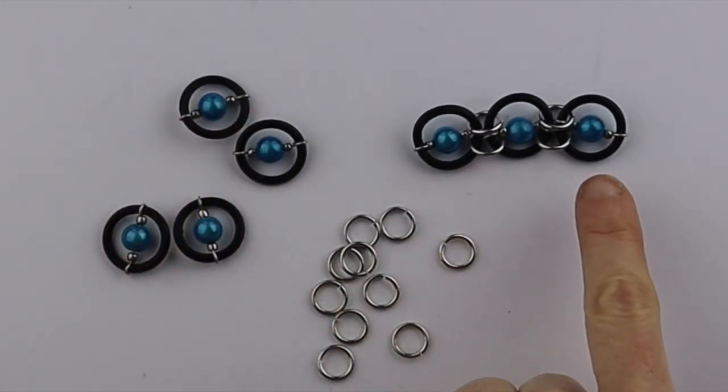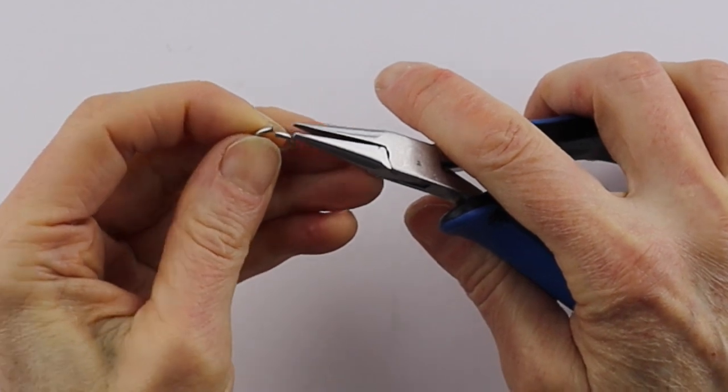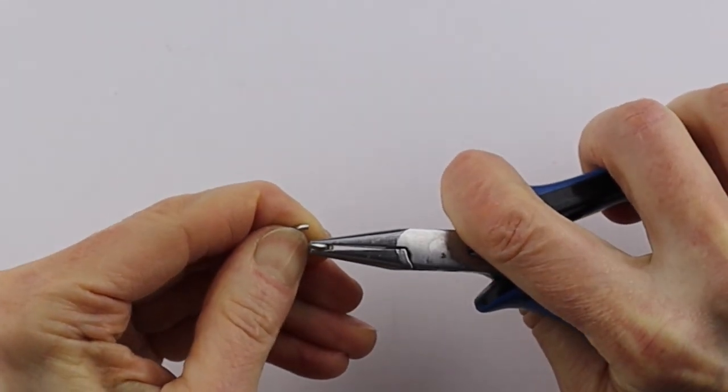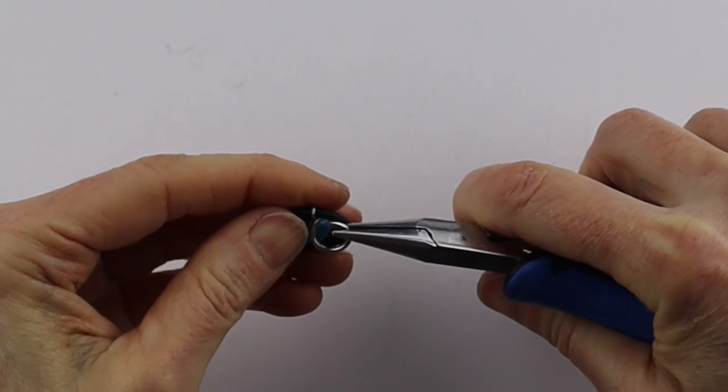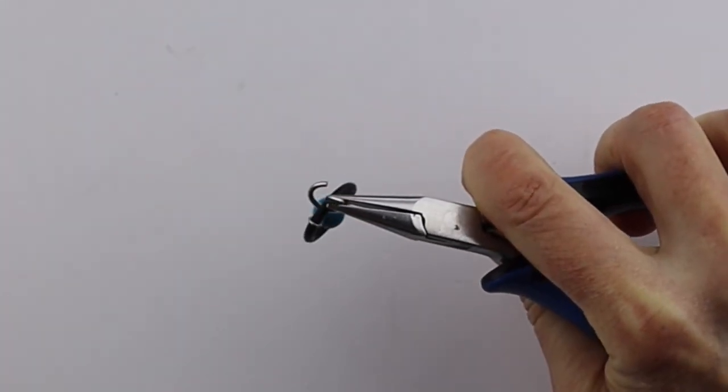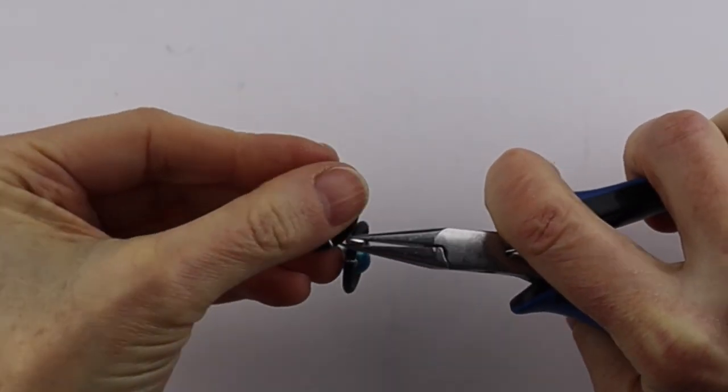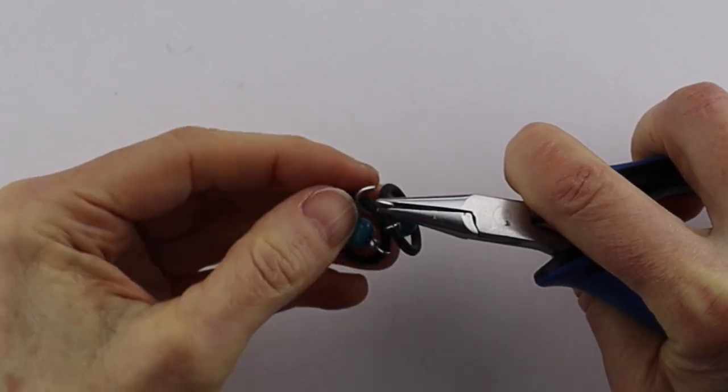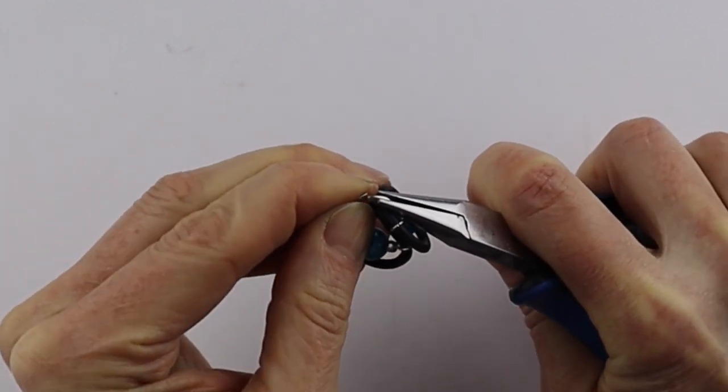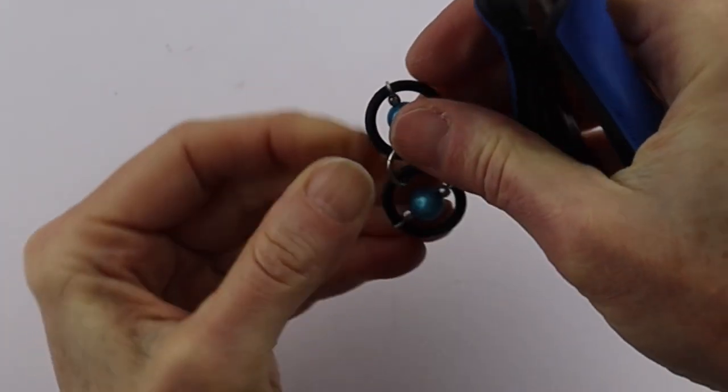Once you have a bunch of these done, we're going to attach them with jump rings. Take the jump ring, open it up, take your piece and slide it onto the piece. Take another one, put it on the other side of that wire, close it up, and then flip it around.